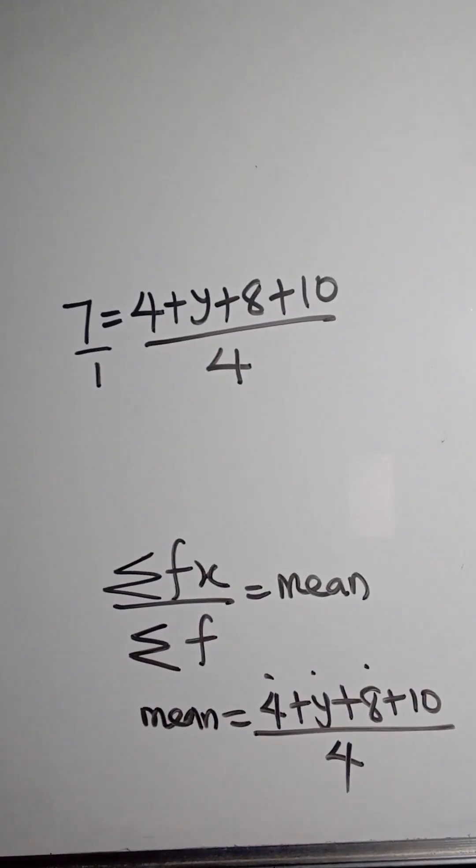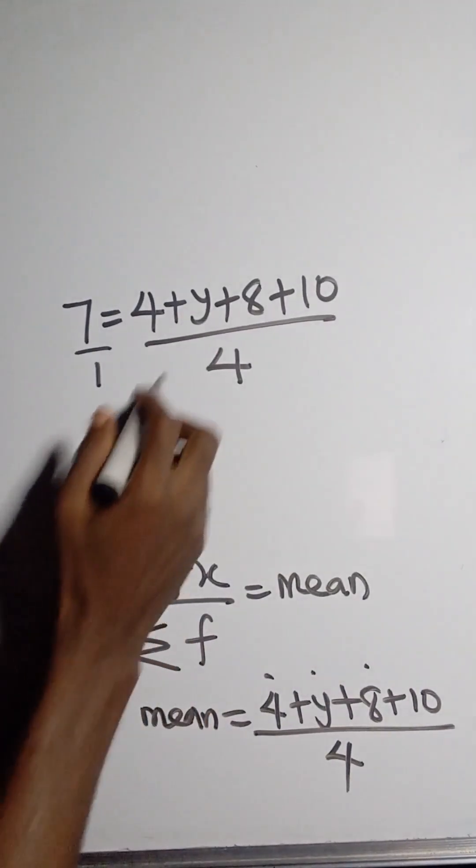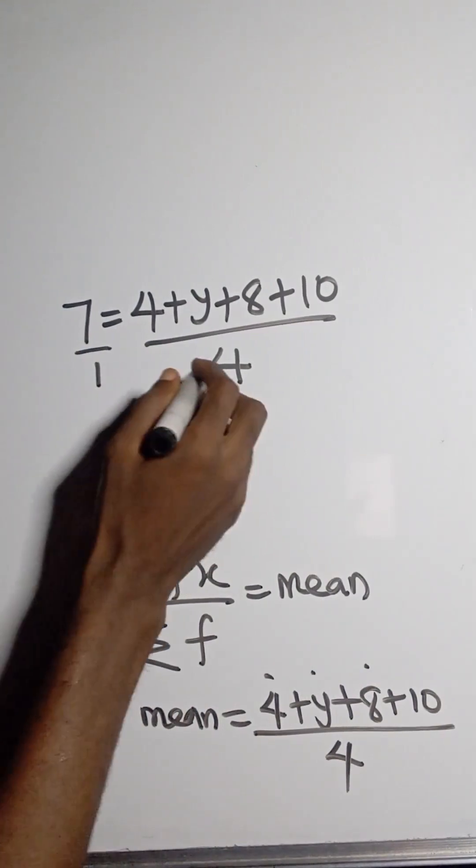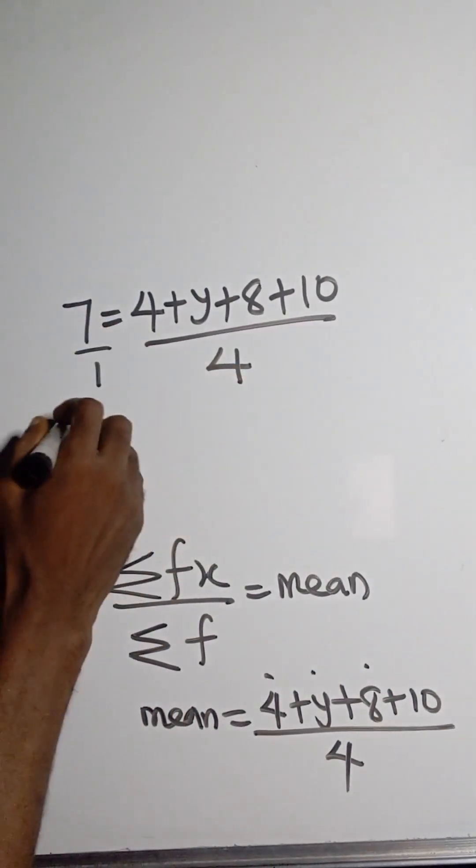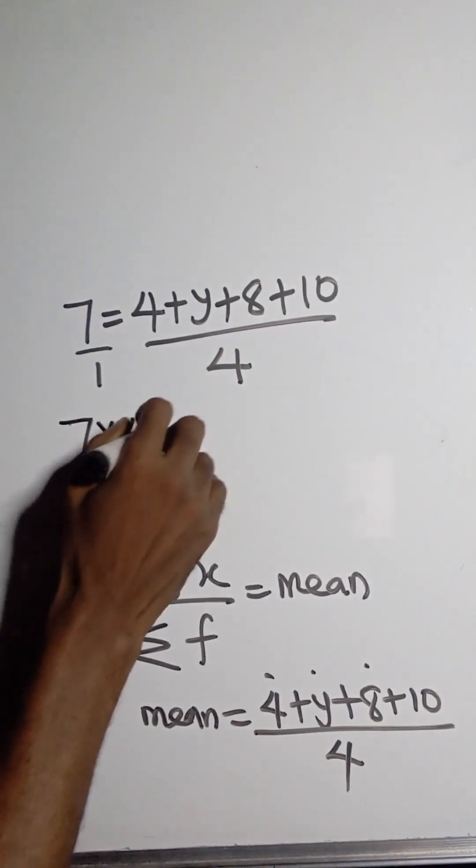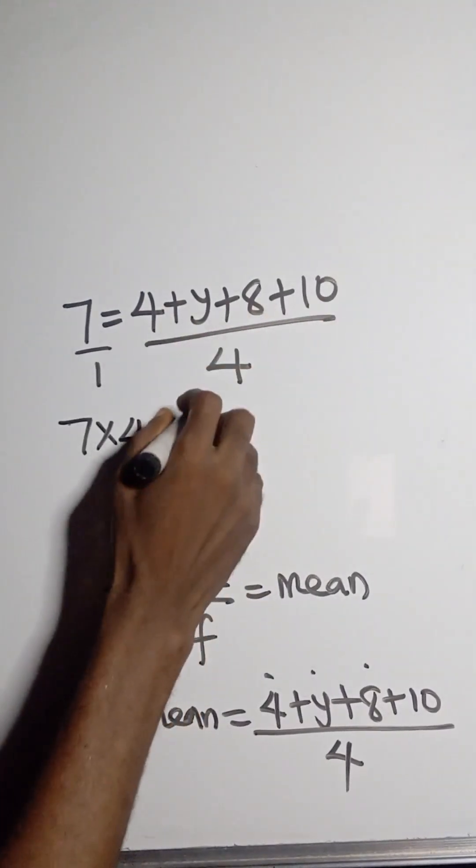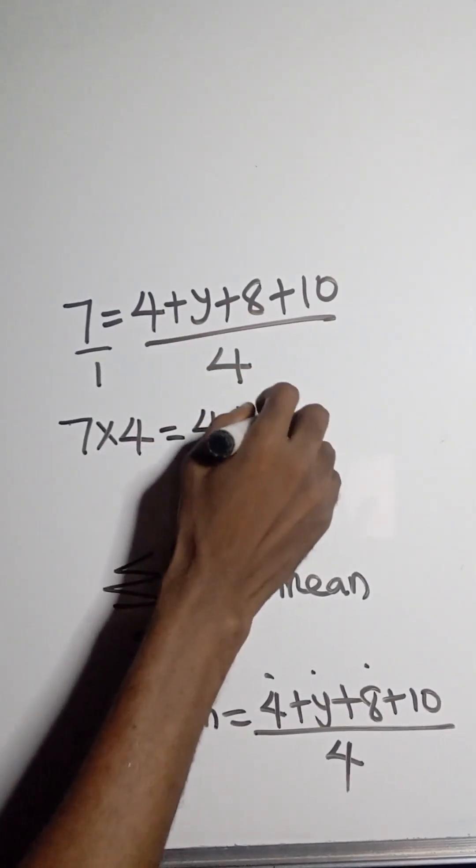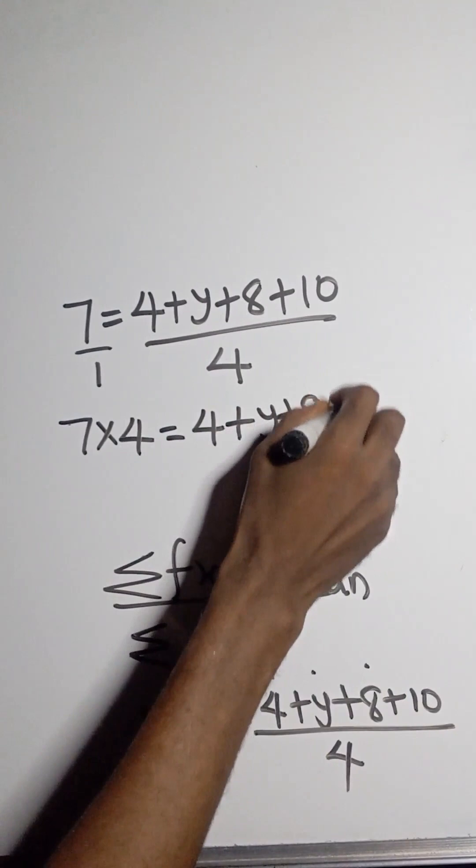So what can we do at this point? What I can simply do is cross multiply. So I have 7 times 4 is equal to, multiply all this, so I have 4 plus y plus 8 plus 10.